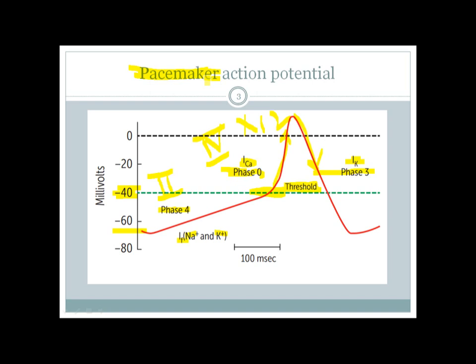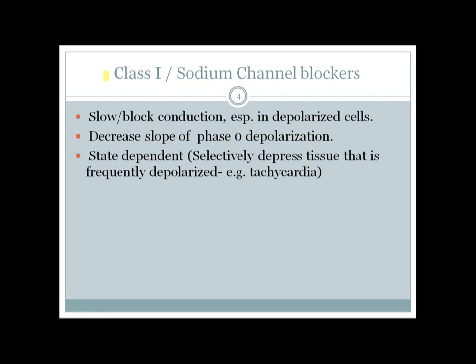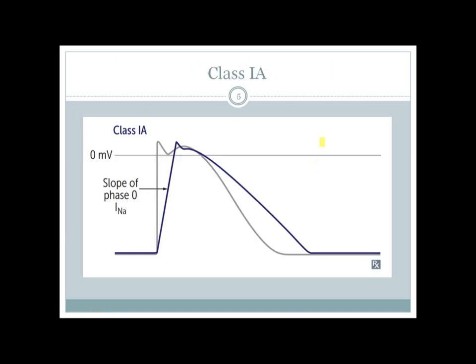Class 1 agents are sodium channel blockers. They slow down or block conduction, especially in depolarized cells, and decrease the slope of phase zero depolarization. They are state-dependent: if tissue is experiencing tachycardia or high heart rate, these drugs will have more effect on that tissue.